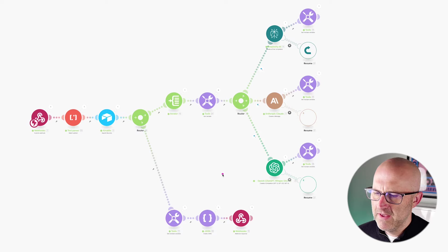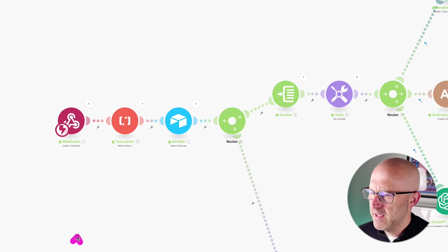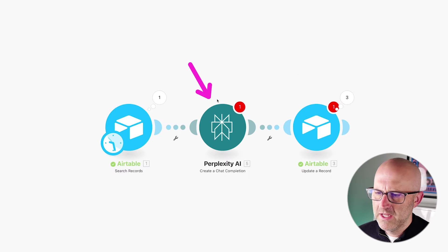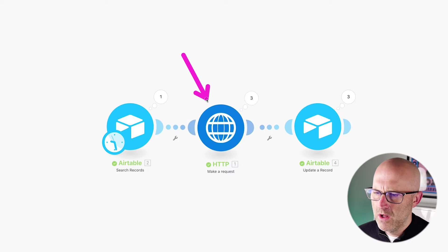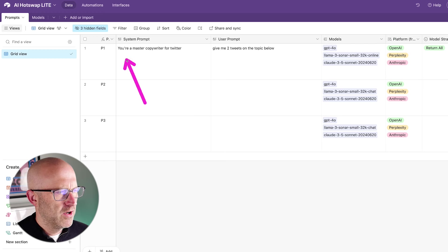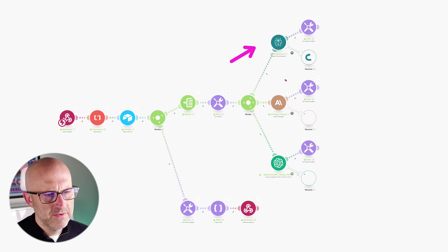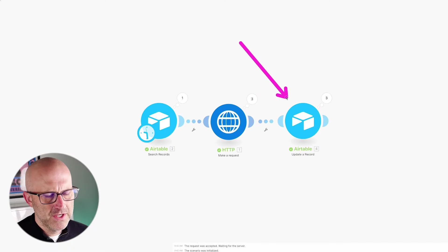With this automation, if you have a problem with a single platform like OpenAI, it'll automatically move to Claude or Perplexity to keep everything running. Along the way you're going to learn to build out your own Make API. Instead of calling Perplexity or ChatGPT directly, we're going to call our own API automation, which will pull our system and user prompts directly from Airtable where we declare which models we want to use on the various platforms. Our API will reach out to the various platforms and return a result.